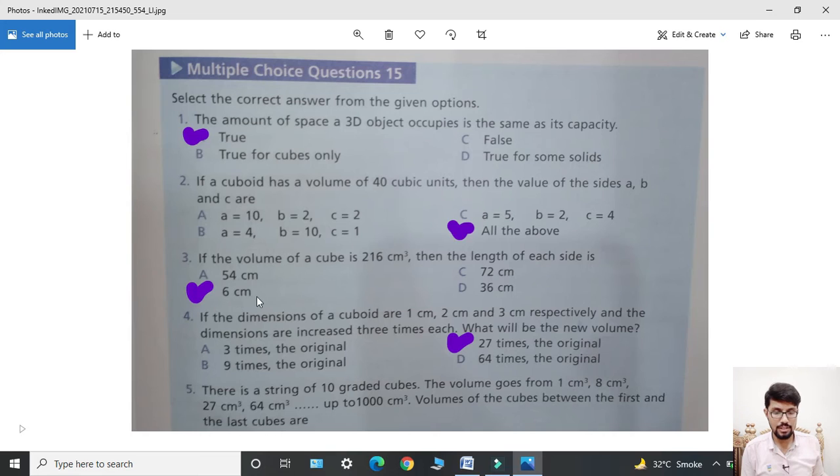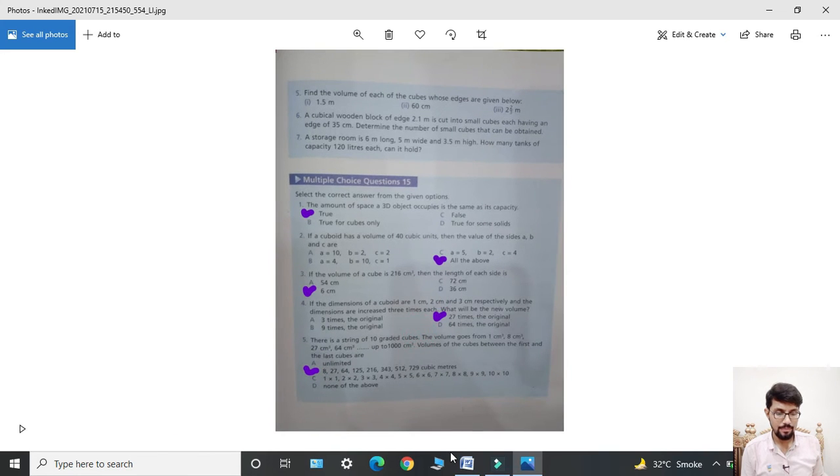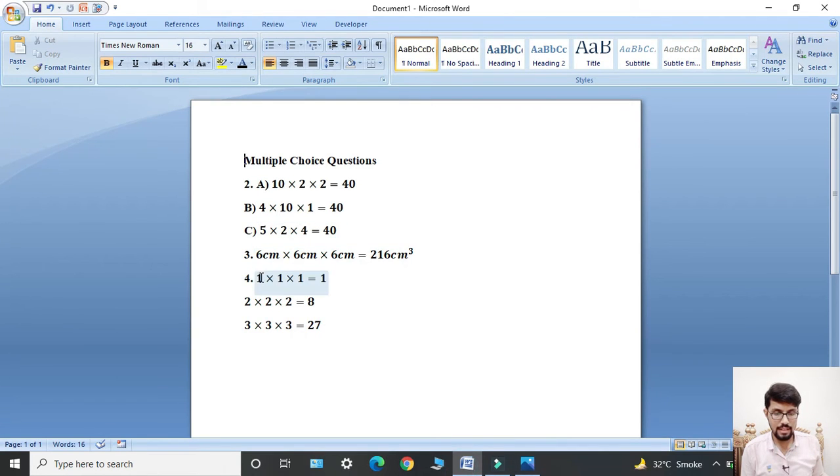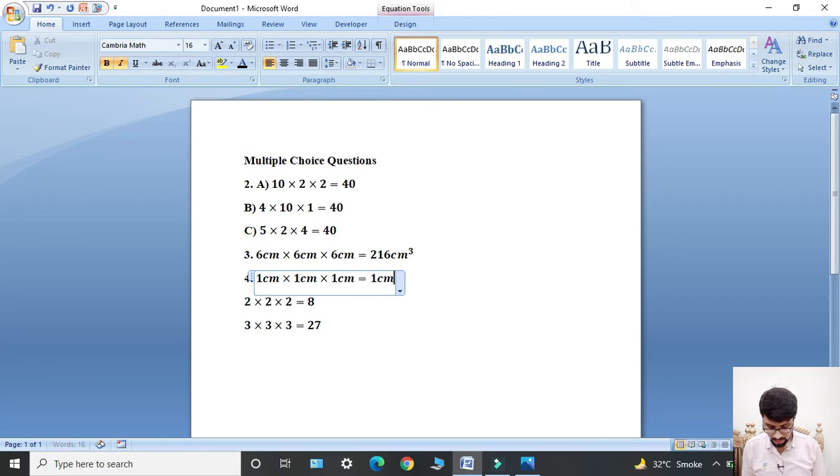Fourth: If the dimensions of a cuboid are 1 centimeter, 2 centimeter, and 3 centimeter respectively, and the dimensions are increased three times each, what will be the new volume? For 1 centimeter multiplied three times: 1 cm × 1 cm × 1 cm equals 1 cm cube.